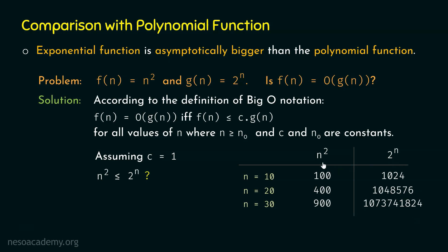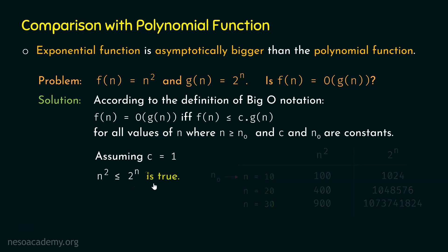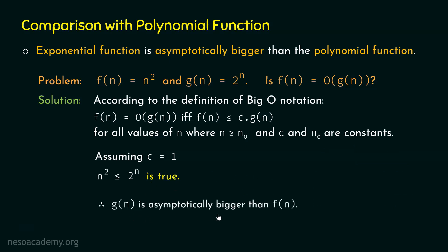This holds when n is greater than or equal to n0, where n0 equals 10. So clearly, n squared is less than or equal to 2 to the power of n. This inequality is true. Therefore, g(n) is asymptotically bigger than f(n), and we can say that the exponential function is asymptotically bigger than the polynomial function.